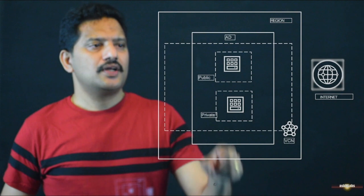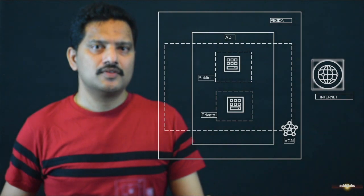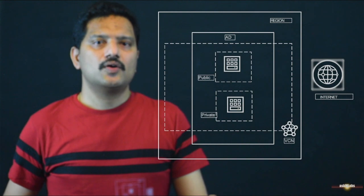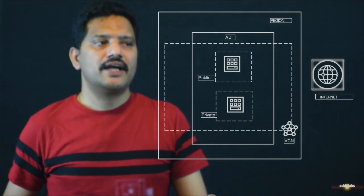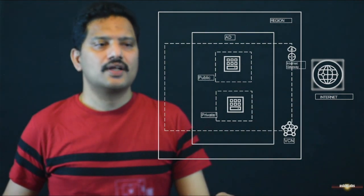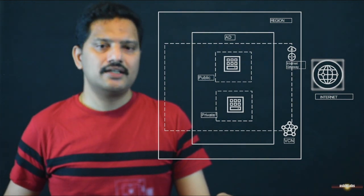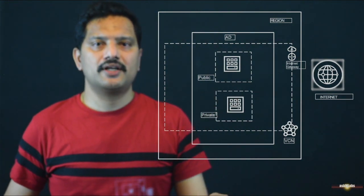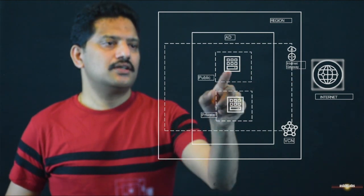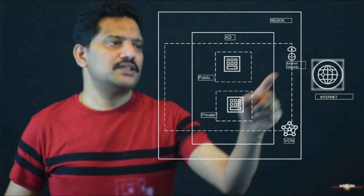Consider a VM in a public network. For this VM to talk to the internet, and for clients on the internet to talk to this VM, we have a gateway called the Internet Gateway. This Internet Gateway gives access to the internet for all VMs defined in the public network, and all clients from the internet can access VMs or any resource in the public subnet through this Internet Gateway.